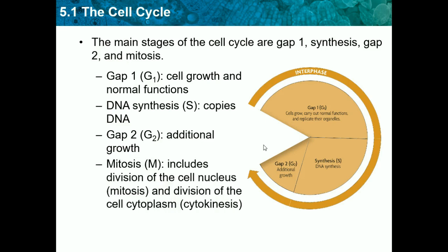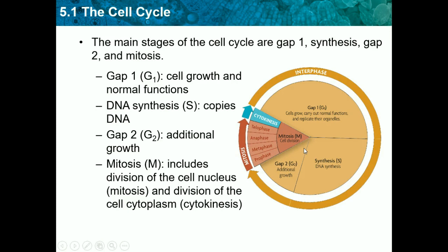Lastly, we have Mitosis, which is M. Hopefully you already know what mitosis is from your middle school science classes. Mitosis includes division of the cell's nucleus and division of the cell's cytoplasm. It is cell reproduction or cell division, and it has four to five stages: Prophase, Metaphase, Anaphase, Telophase, and also Cytokinesis. We will learn the process of this in another video.